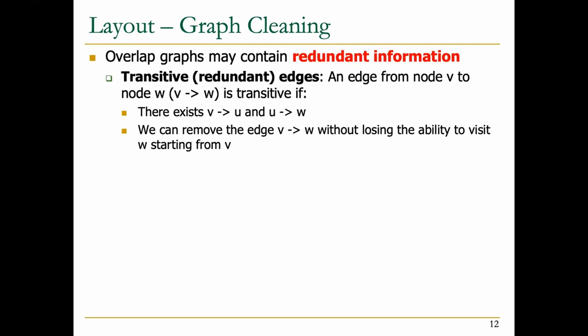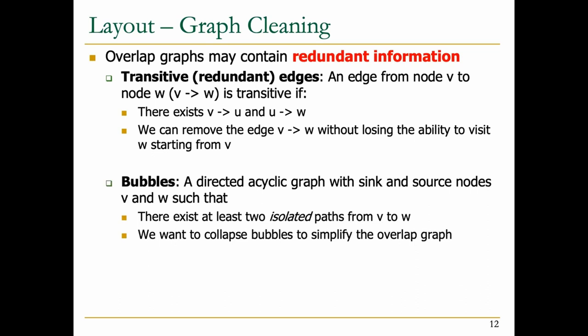Another term is bubbles, which are similar to transitive edges but with slight differences. Bubbles are directed acyclic graphs where the sink and source nodes have at least two completely isolated paths between them. If such two isolated paths exist, the assumption is that we can collapse one of the bubbles to simplify the overlap graph. After performing transitive edge removal, you should be safe to do the bubble collapsing step as well.